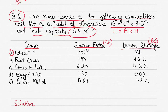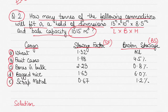The broken stowage for wheat is nil. If you don't know what stowage factor and broken stowage are, please watch my other video where I've explained them with a diagram. The other cargoes in this question include fruit cases, bones in bulk, bagged rice, and scrap metal — all of which have a certain stowage factor and broken stowage.